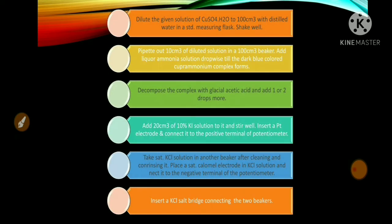Let us first understand how we are going to perform this experiment. You are provided with an unknown quantity of copper sulphate solution in a 100 cm³ volumetric flask. Dilute the given solution of copper sulphate pentahydrate to 100 cm³ with distilled water in a standard measuring flask and shake well. Then pipette out 10 cm³ of the diluted solution in a 100 cm³ beaker and add liquor ammonia solution dropwise until the dark blue colored cuprammonium complex forms. Then decompose the complex with glacial acetic acid and add 1 or 2 drops more.